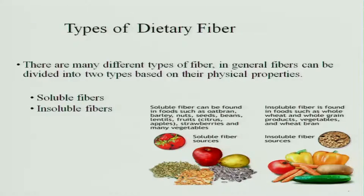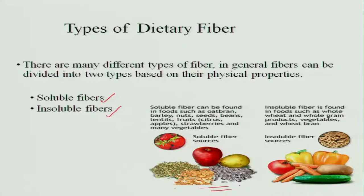The types of dietary fiber: in general, fibers can be divided into two types based on their physical properties. One is soluble fiber and the other is insoluble fiber. Soluble fiber can be found in foods like oat bran, barley, nuts, seeds, beans, lentils, fruits, strawberries, and many vegetables. Insoluble fiber is found in foods such as whole grains, whole wheat, whole millets and whole grain products, vegetables, and wheat bran.